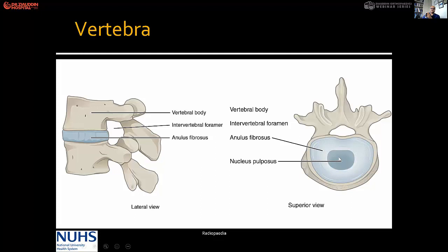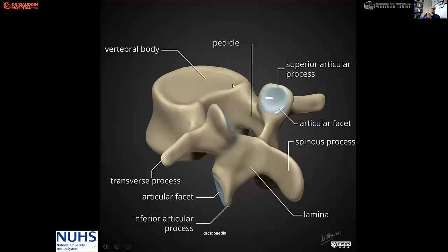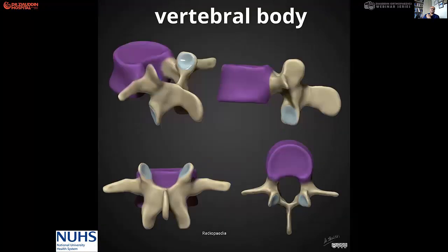The disc is divided into annulus and nucleus pulposus. The pedicle — this is the base of the pedicle, the root of the pedicle, and the body of the pedicle — is very important for spine surgeons. Then we have the superior and inferior articular facets. This is a typical lumbar vertebra, and the anatomy of the other vertebrae is also similar.